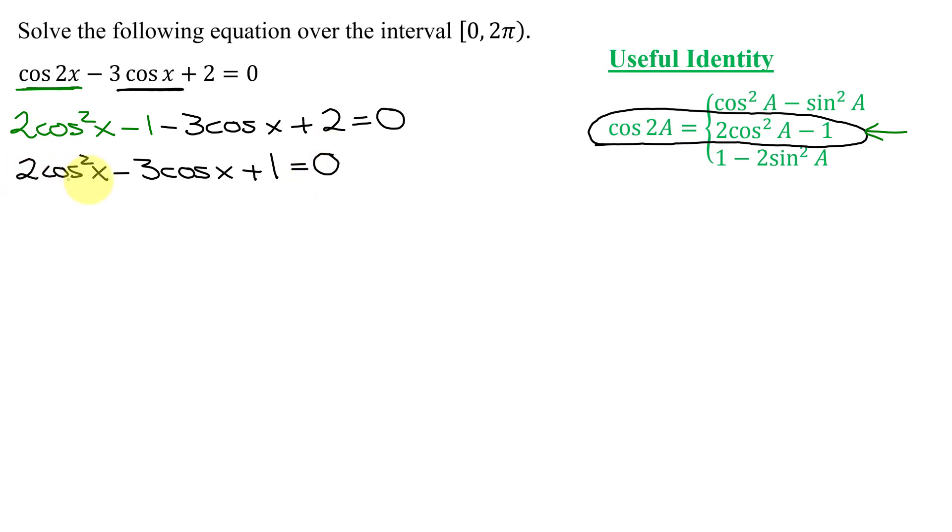So now I have my quadratic equation in descending order. I can then factor it. And some students are a bit nervous about factoring with a trig function in there. So this one I'm going to factor by doing a very quick substitution. I'm going to let u equal the cosine of x. And so my equation becomes 2 times u squared minus 3 times u plus 1 equals 0.